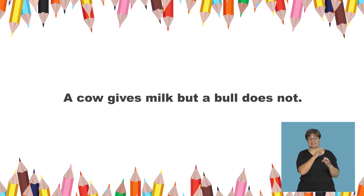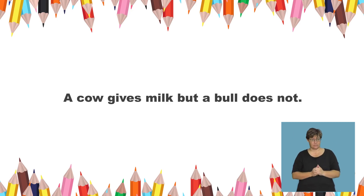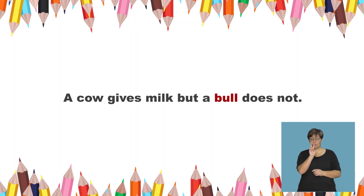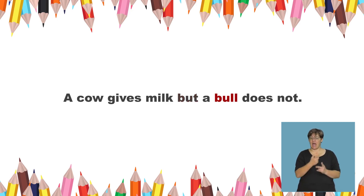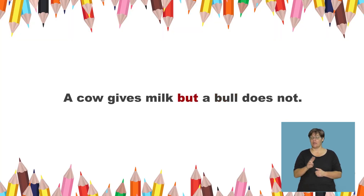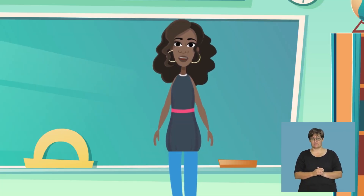Say this sentence: a cow gives milk, but a bull does not. Listen to these two words from the sentence: bull and but. Which one has the U sound? That's right — that was well done.